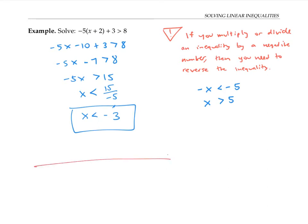If I wanted to graph this on a number line, I put down a negative three with an open circle around it and shade to the left. I use an open circle because x is strictly less than negative three and can't equal it. In interval notation, I write soft bracket negative infinity, negative three, soft bracket — the soft bracket again because negative three is not included.